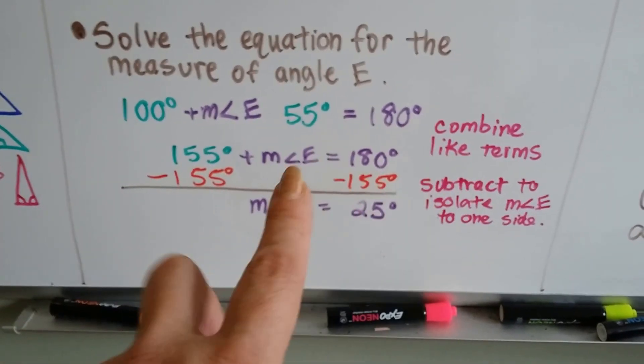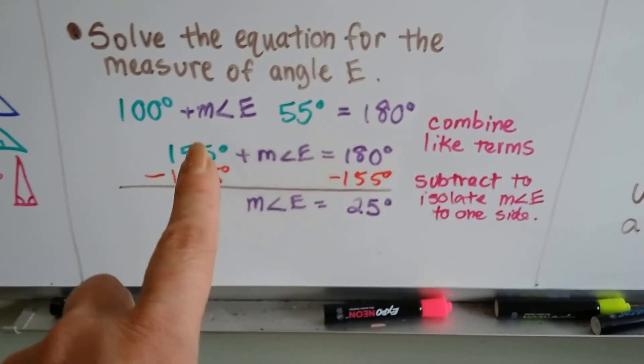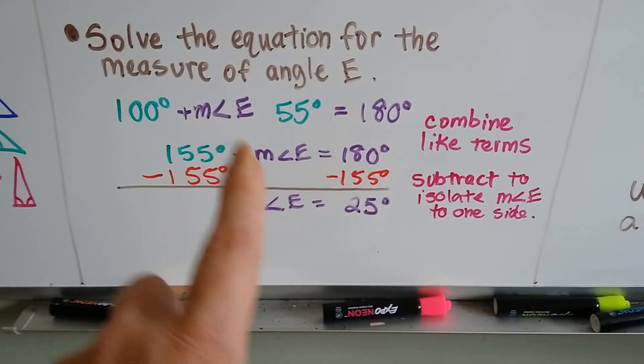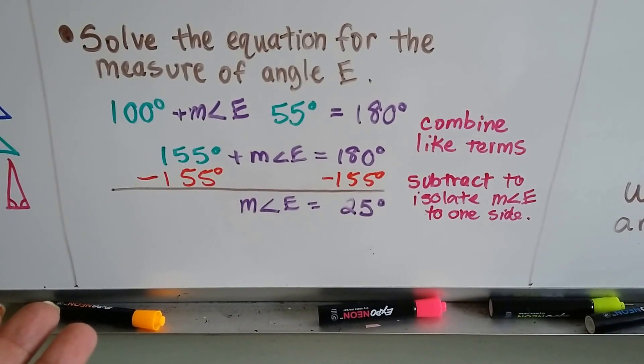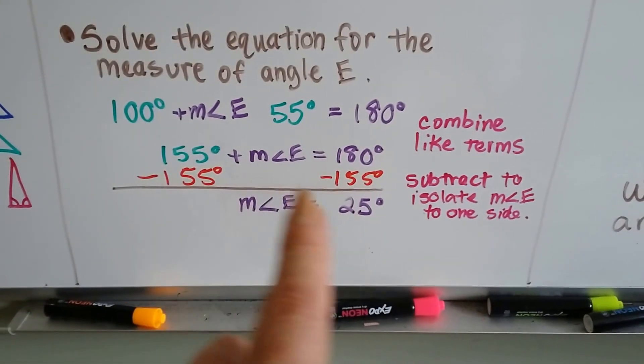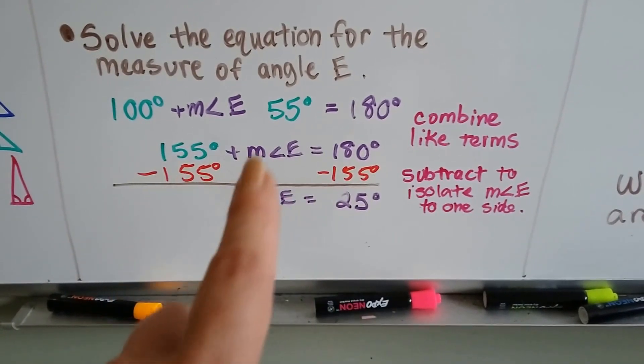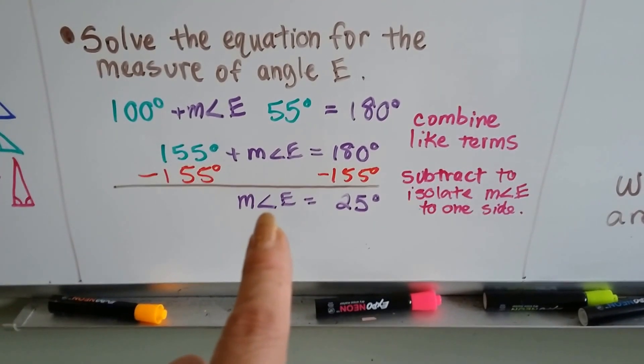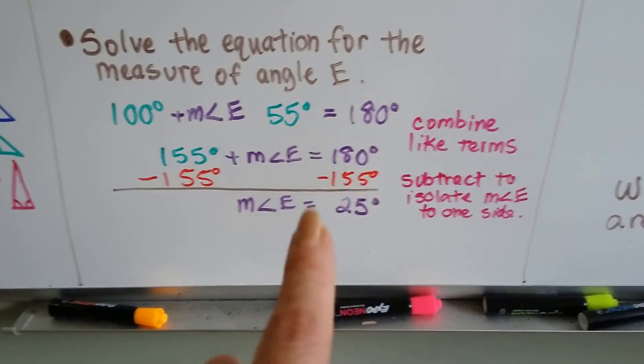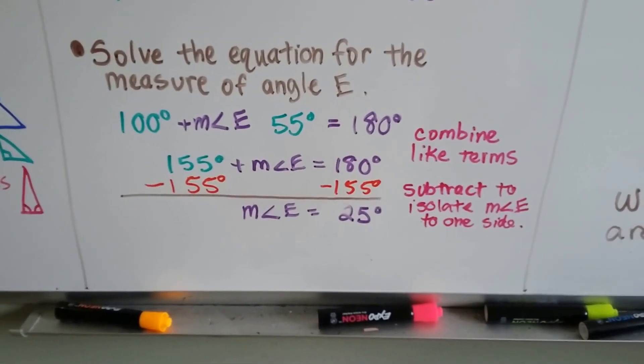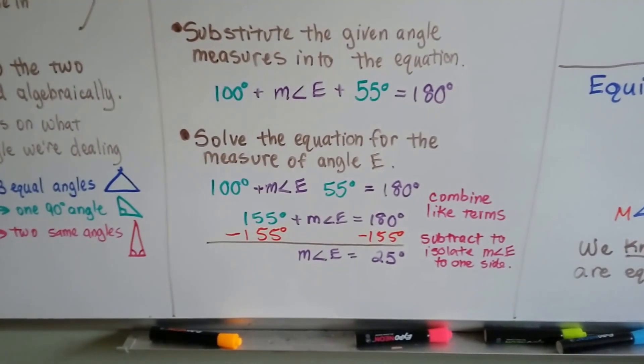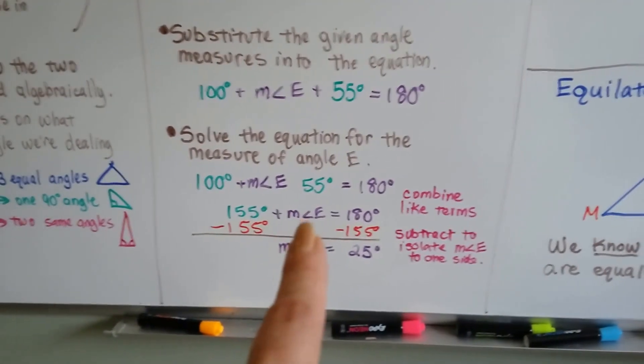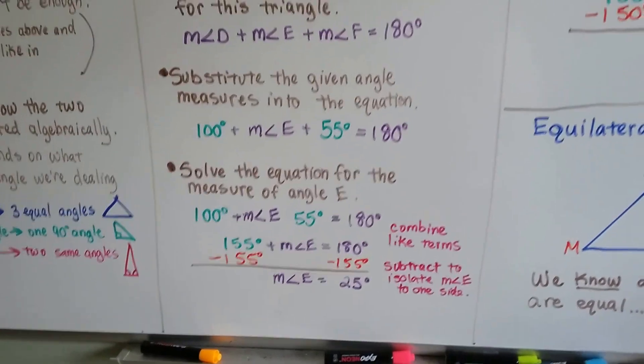We combine the like terms, so 155 degrees plus the measure of angle E equals 180. To continue algebraically, we subtract the 155 degrees from each side to isolate the measure of angle E to one side, and we get that the measure of angle E is 25 degrees. We could have done it a quick way, but it's better to show you how to do it this way so you formally know how to do it.